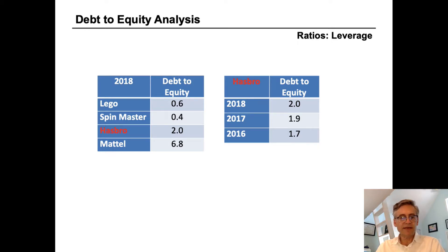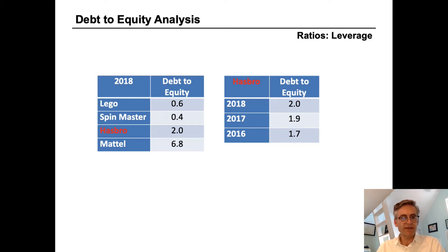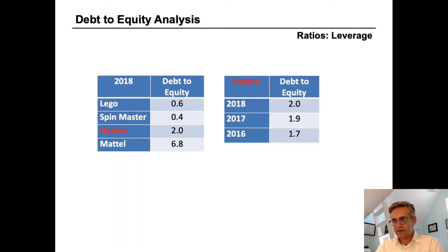Starting on the left-hand chart on this page, we can see that Hasbro's debt-to-equity ratio of two is significantly lower than Mattel's at 6.8, but very much higher than both Lego's and Spinmaster's — each of those are less than one. And when we use horizontal analysis to compare 2018 debt-to-equity of two to the same measure in 2017 and 2016, we can see that Hasbro has been taking on more debt over time.